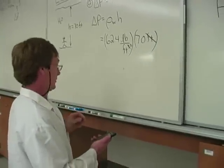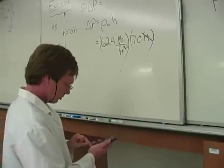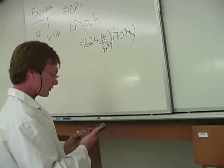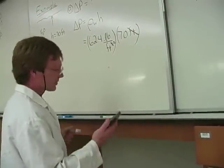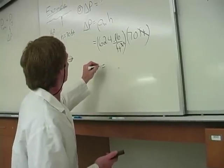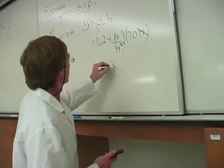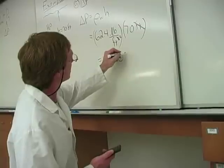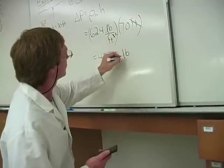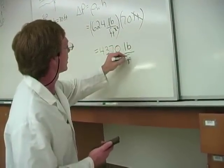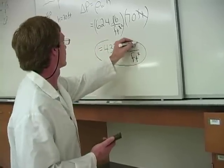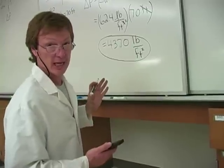Let's check that out. 62.4 times 70 equals 4,368. OK, about 4,370. And that's going to be pounds per square foot. That's his gauge pressure.